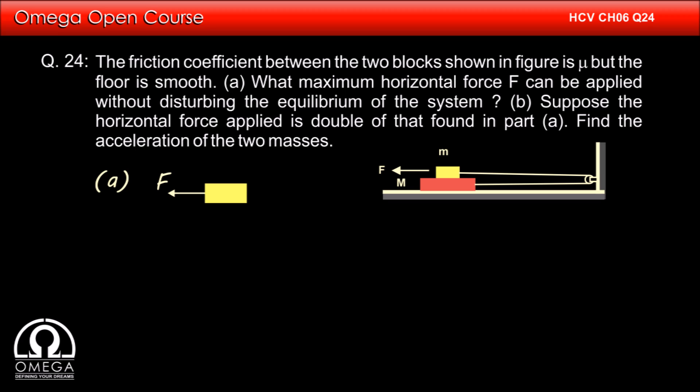Let us first draw the free body diagram of the block on top. A horizontal force F is pulling it towards left. Tension T and friction will oppose this force.